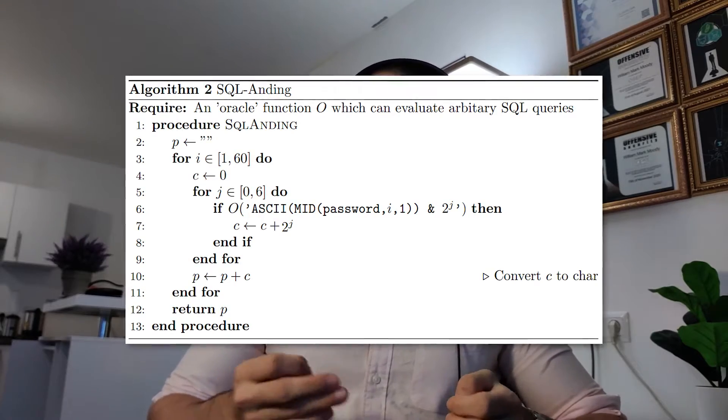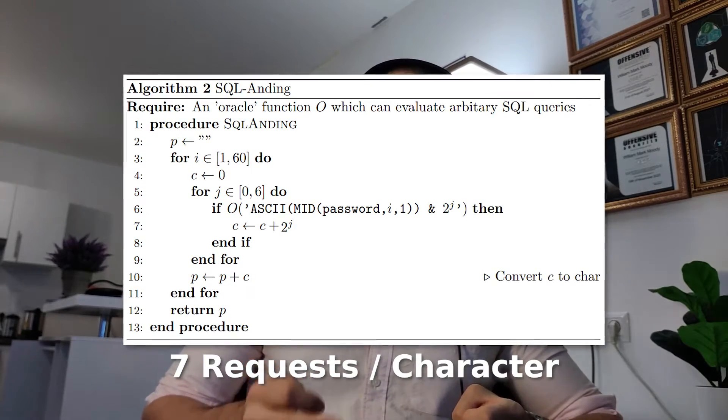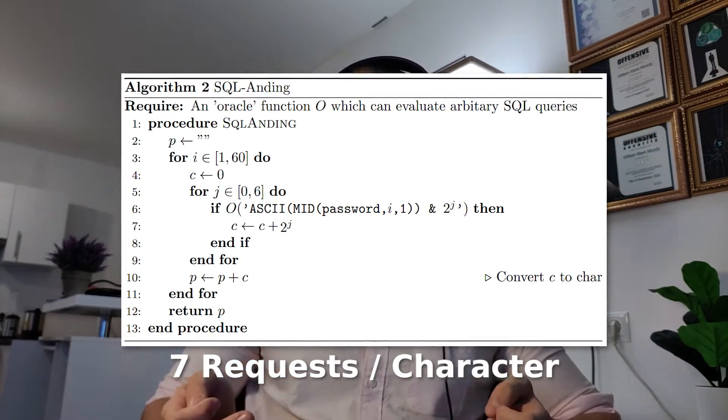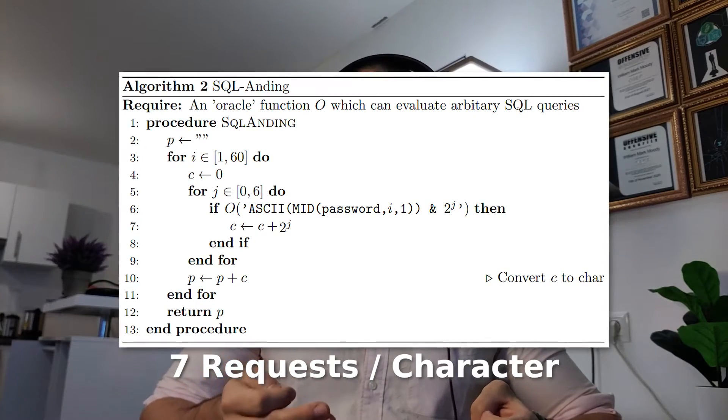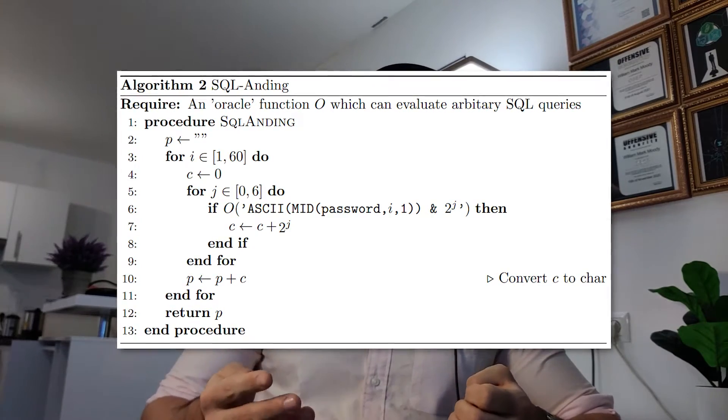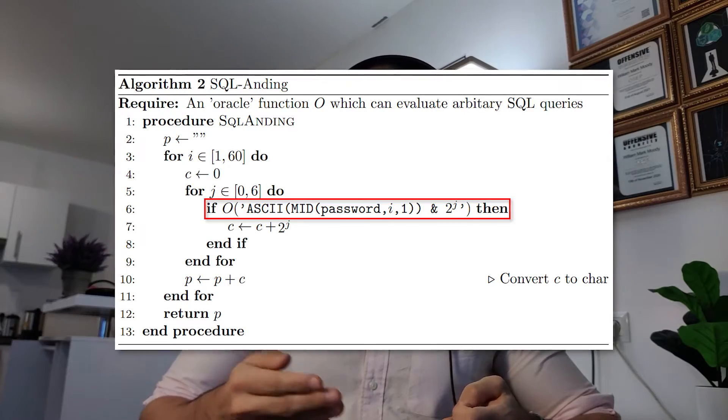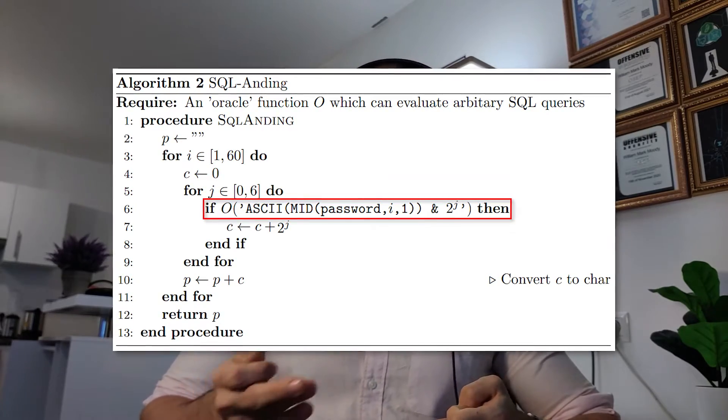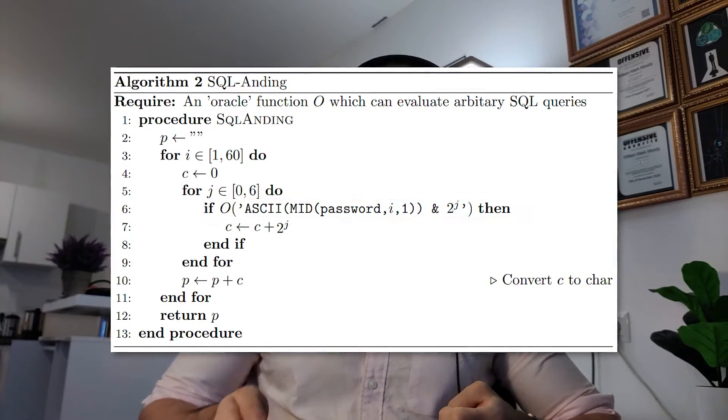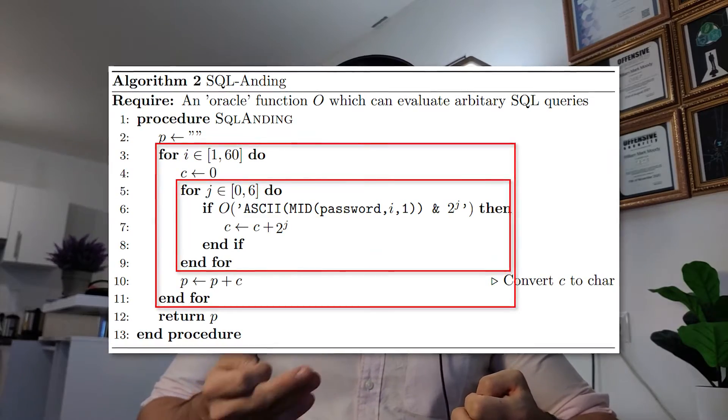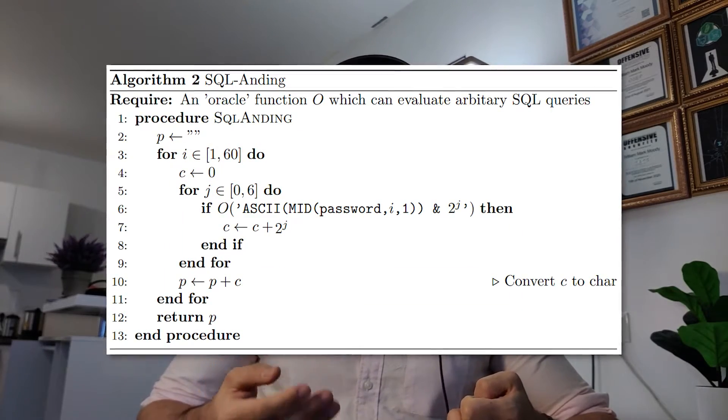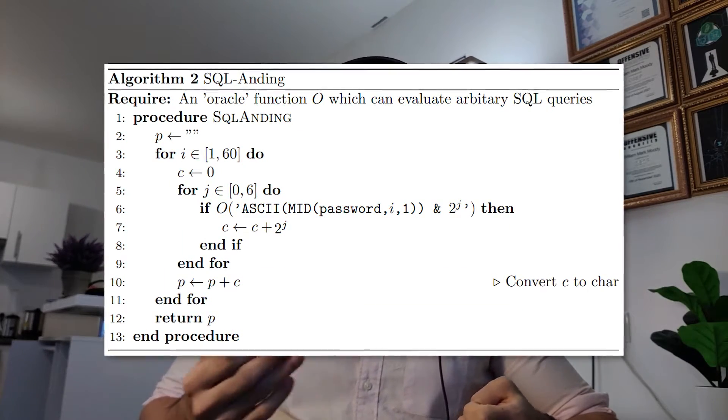Both SQL anding and bisection require 7 requests to dump an ASCII character, so it might not seem like there is much of an advantage to either at first. However, in SQL anding, the queries we send to the server do not depend on each other and can be run in any order, which means that both loops can be parallelized, and the algorithm should run much quicker than bisection in theory.